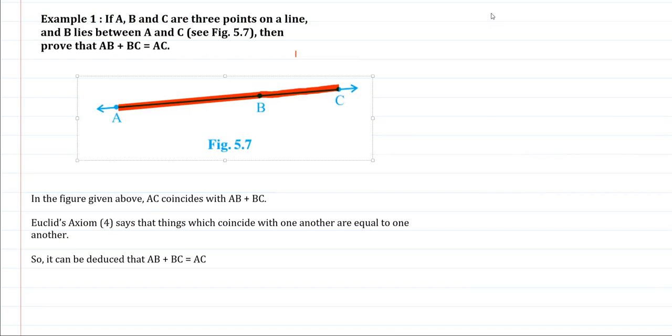So we simply need to say that this line AC coincides with AB plus BC, giving the reason for applying the axiom - that is the fourth axiom which says that things which coincide with one another are equal to one another. And in the last step, we must mention that it can be deduced that AB plus BC is equal to AC.